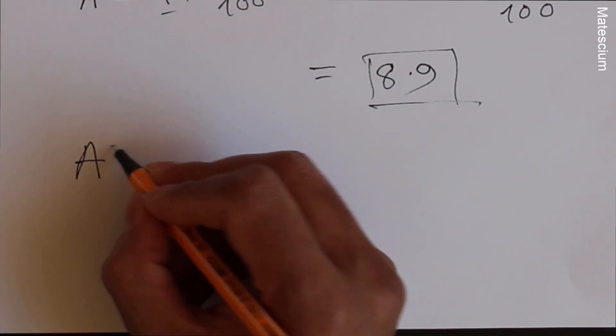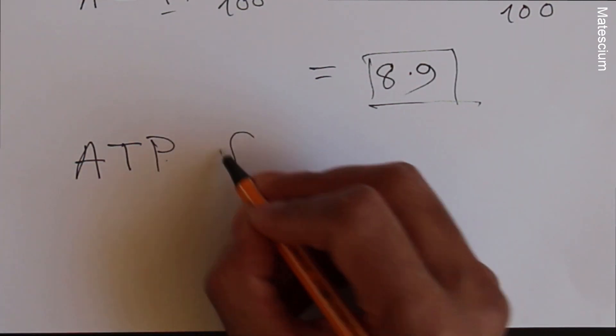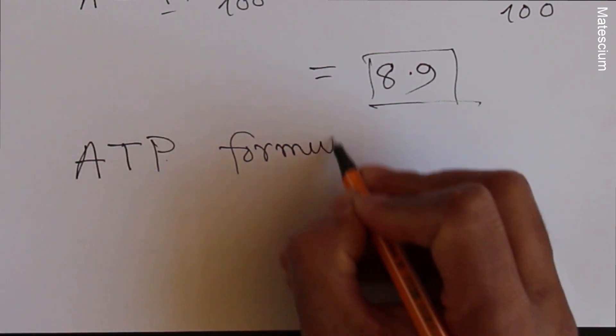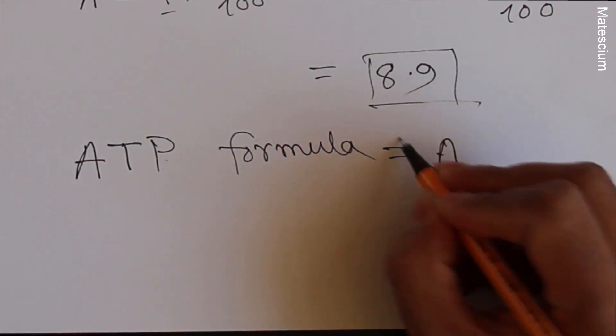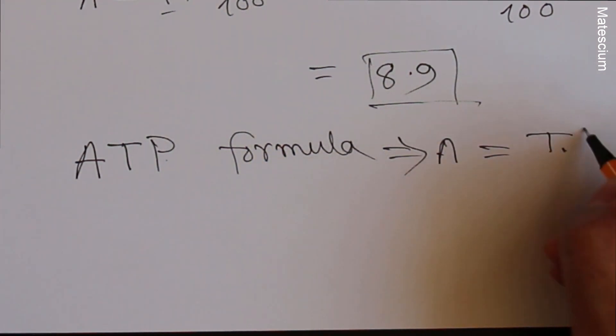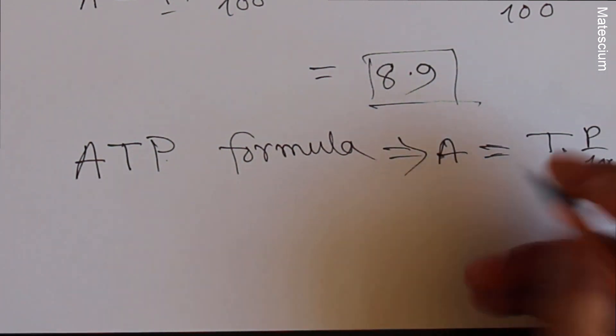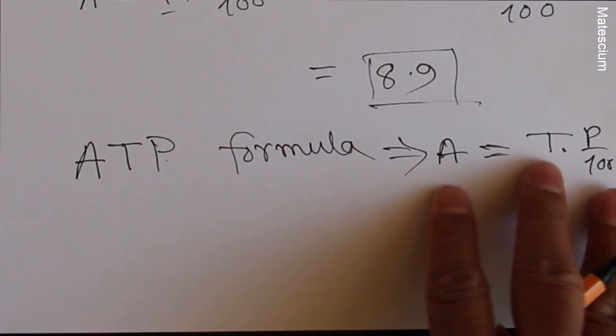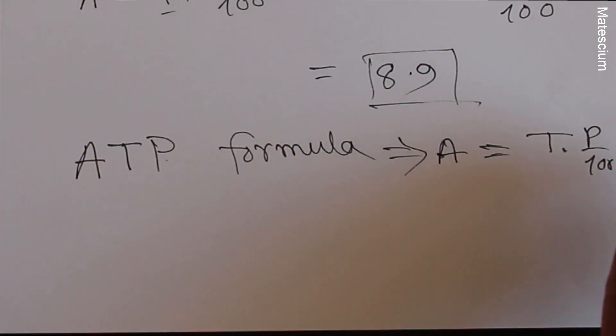Only you have to do, you have to apply ATP formula, which is A equals T times P over 100. You can remember this formula whole life without memorizing anything. Believe me.